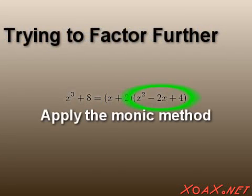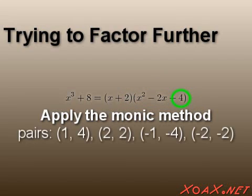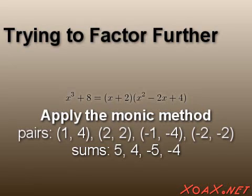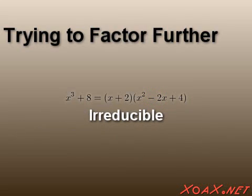To try to factor x squared minus 2x plus 4, we look at the integer pairs that multiply to 4. That is, 1 and 4, 2 and 2, negative 1 and negative 4, and negative 2 and negative 2. These sum to 5, 4, negative 5, and negative 4 respectively. We see that none of these sums is negative 2. This means that the polynomial cannot be factored, and it is called irreducible over the integers.